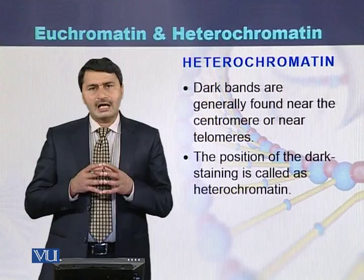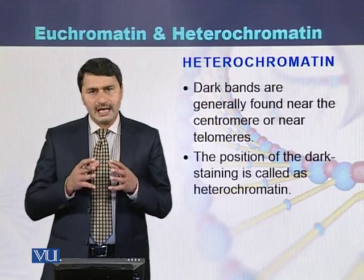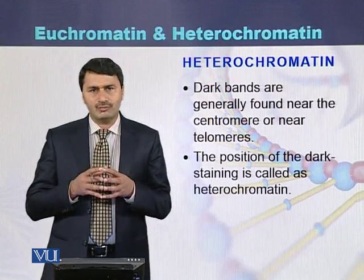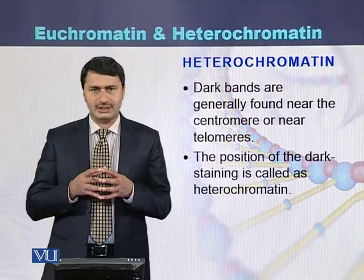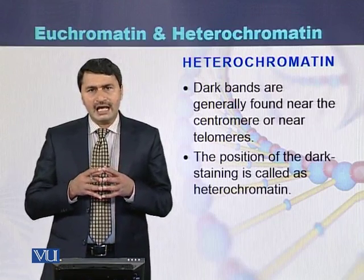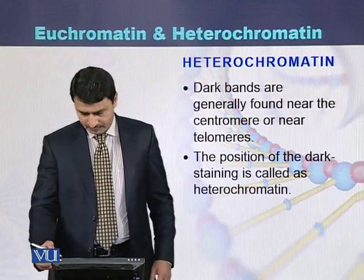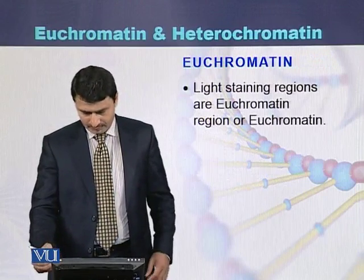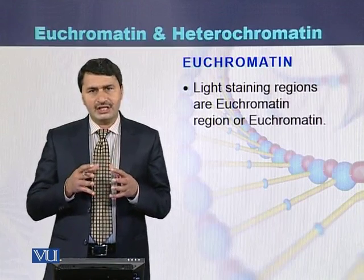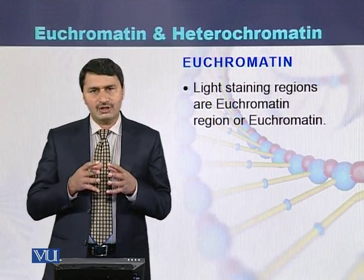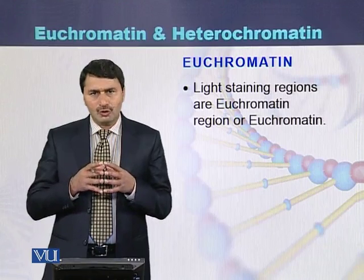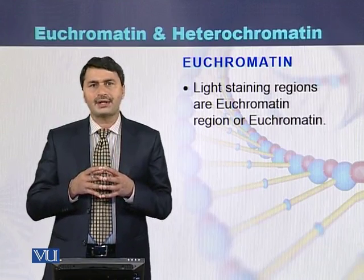Dark bands are usually found at the ends of the chromosomes as well as in the middle of the chromosome where the centromere is located. Dark bands are called heterochromatin, while light bands observed after staining the chromosome are called U-chromatin.